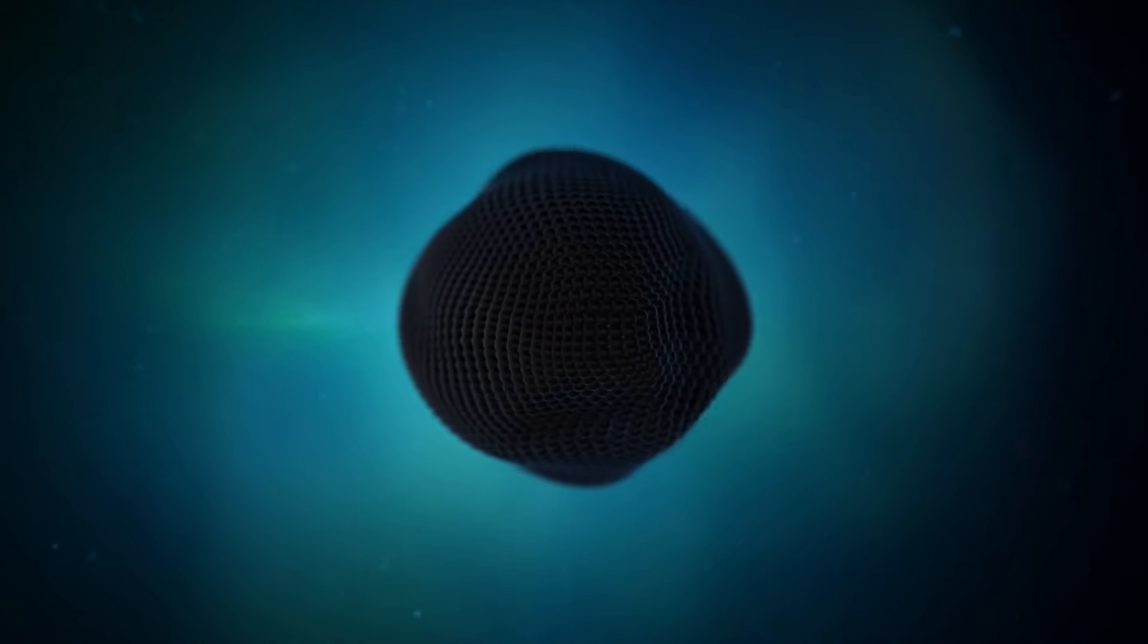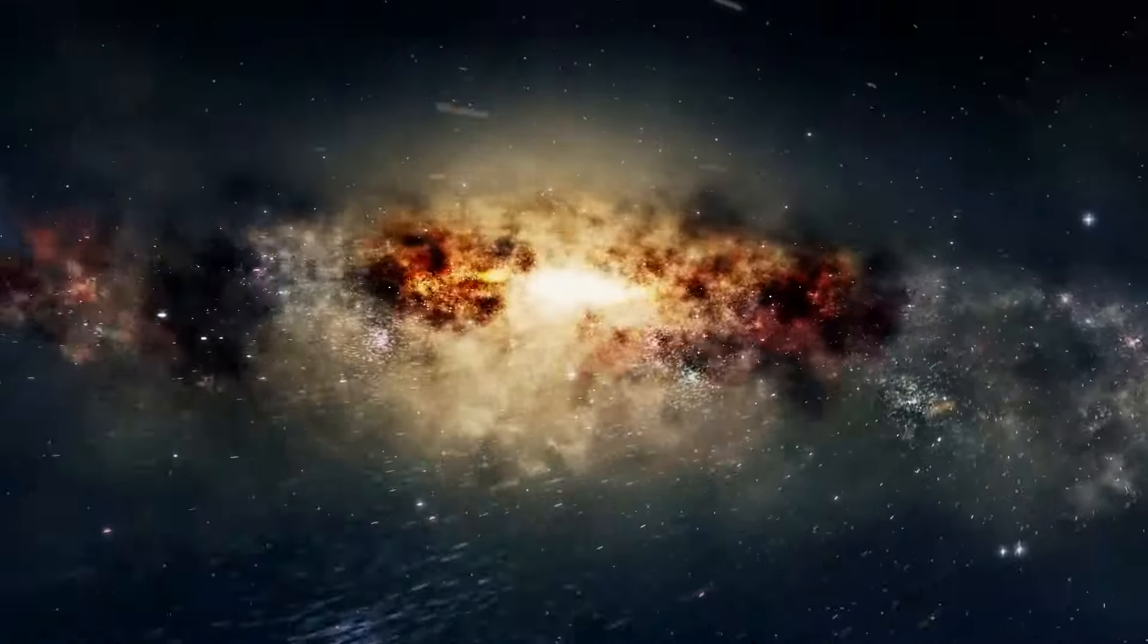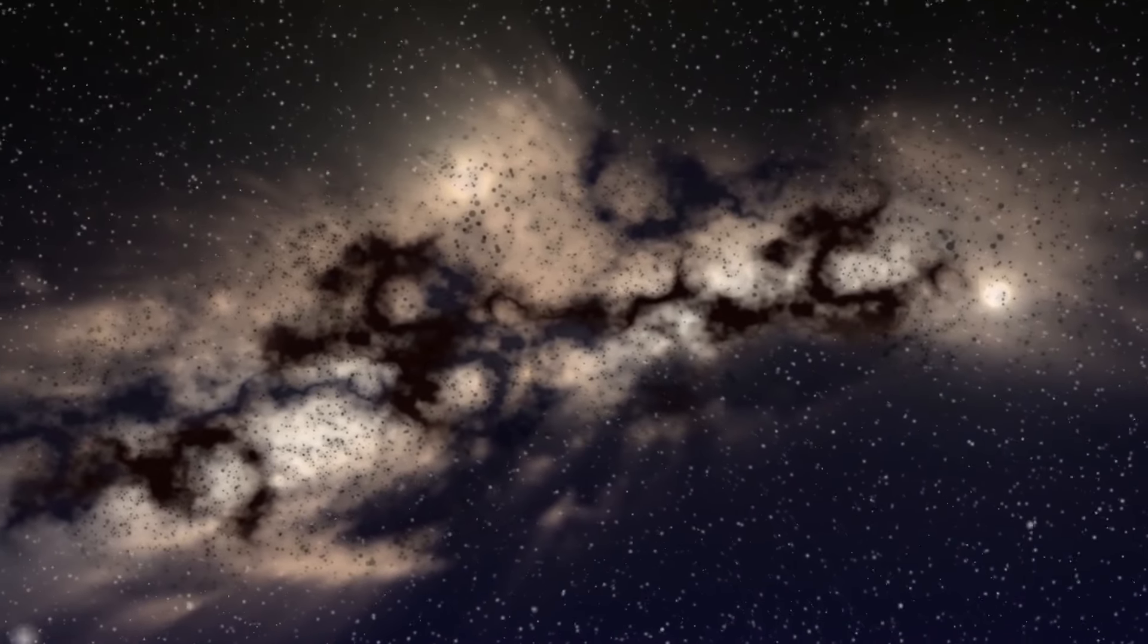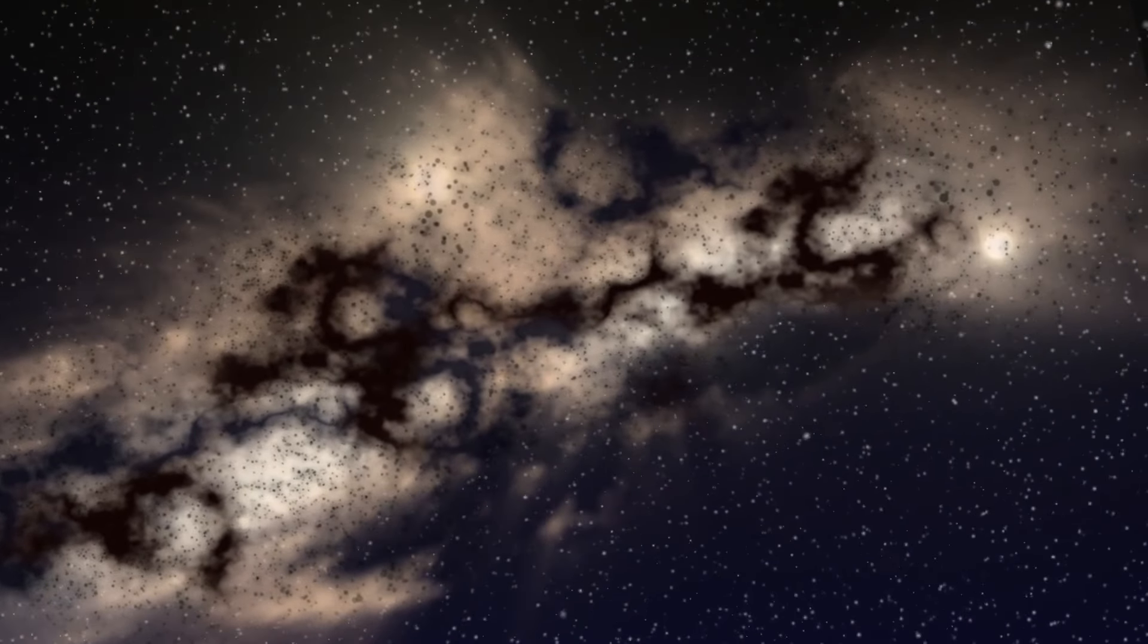This unseen thing, whatever it was, seemed to be exerting a gravitational pull strong enough to hold the Milky Way together. This little discrepancy would eventually lead us down the path to dark matter.